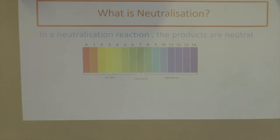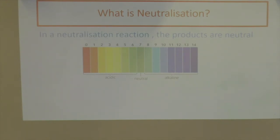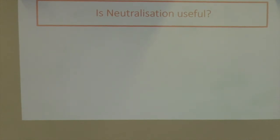The products that are produced are neutral, meaning they are pH 7. On the pH scale, everything from 0 to 6 is acidic, 8 to 14 is alkaline, and pH 7 is neutral. That is why this reaction is called a neutralization reaction. At pH 7, the concentration of H+ and OH- ions are the same.